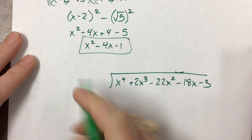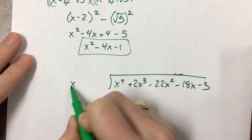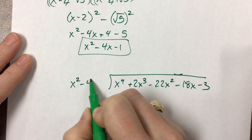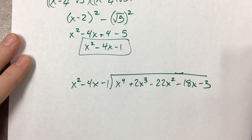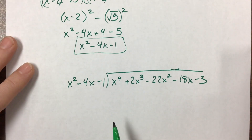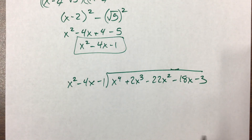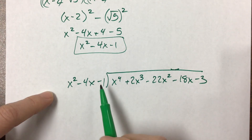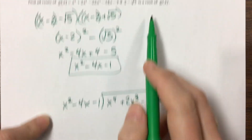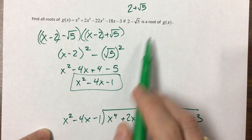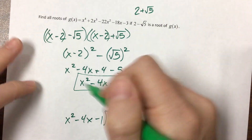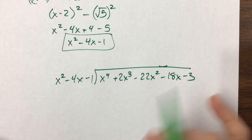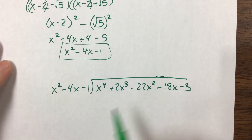I pulled that from the top. And then I'm going to divide it by x squared minus 4x minus 1. If I don't get a remainder of 0, something went wrong. If they're telling me it's a root, then it can divide in nicely. So either I mess up here, or I'm going to mess up later — here's hoping I don't.